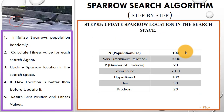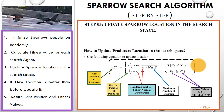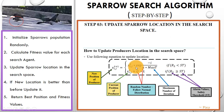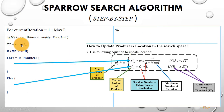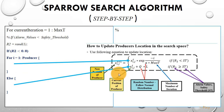Now we will update the sparrow location in the search space. As in the population we have producers and scroungers, first we will update the location for producers using this equation. Here R2 is the alarm value and ST is the safety threshold — you can check everything in detail in part one. The alarm value R2 is generated randomly, and if this condition is true then we will update the position using the first equation, else using the second equation. I've provided a link in the description box for the MATLAB code.